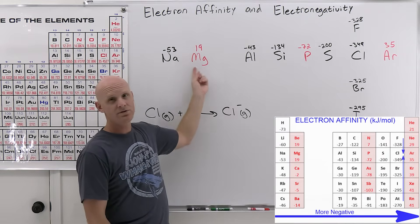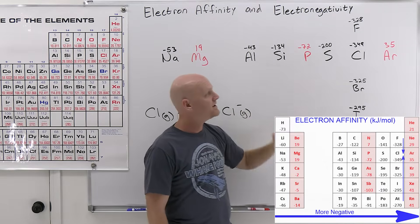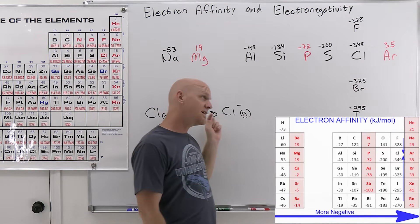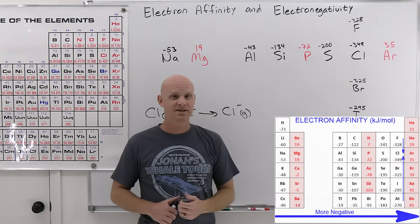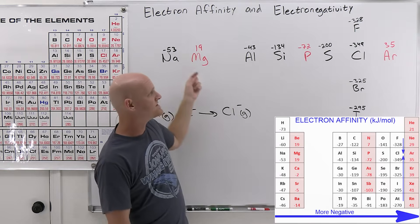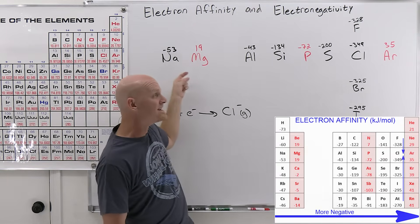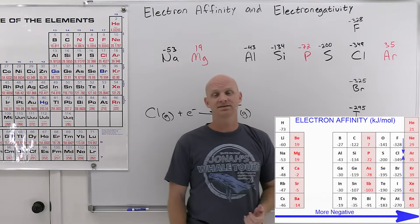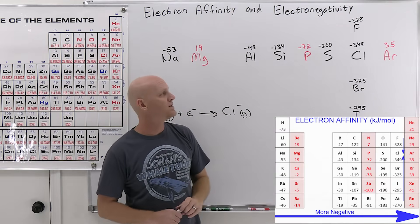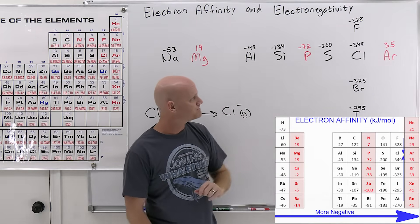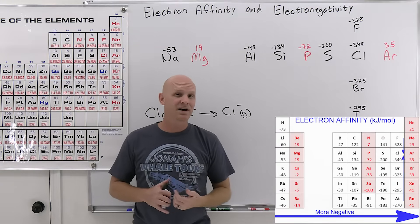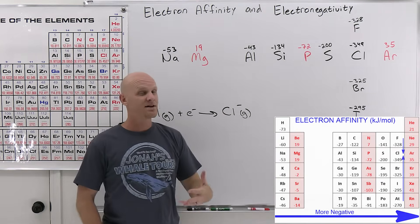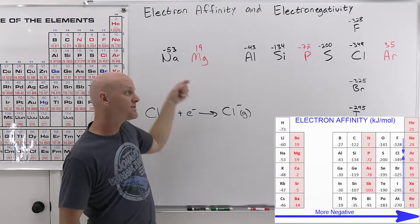We should also treat the noble gases as exceptions here. Part of the general trend is that electron affinity increases going toward the right — meaning it gets more negative — but it doesn't get more negative when you go from the halogens to the noble gases. So they're definitely a violation we treat as an exception, along with the filled S and the half-filled P subshells. There's also no well-defined vertical trend, so all we're really going to say is that electron affinity increases going to the right.